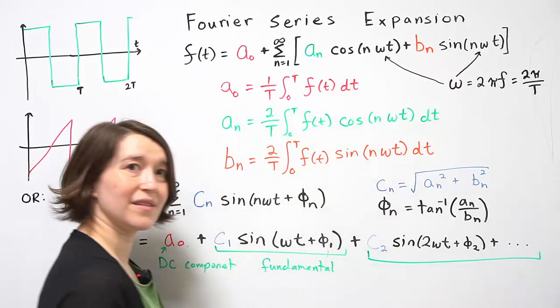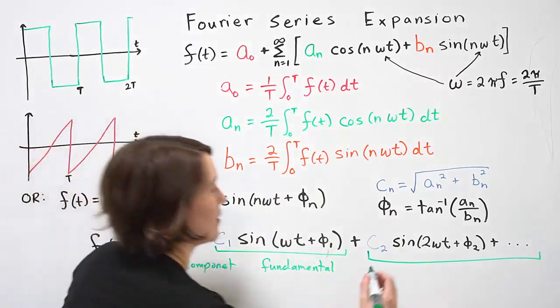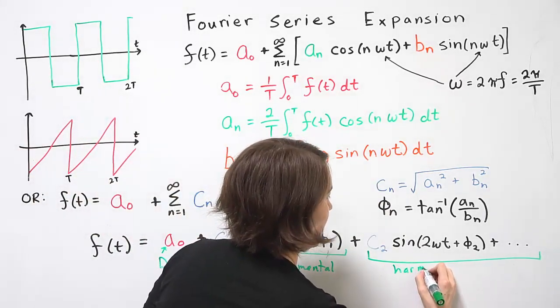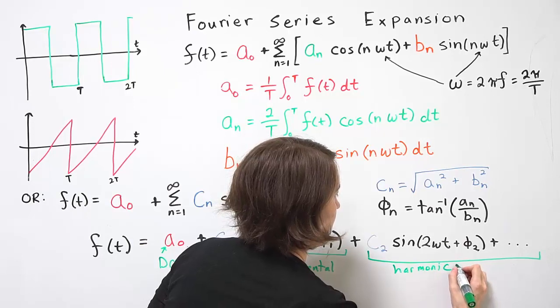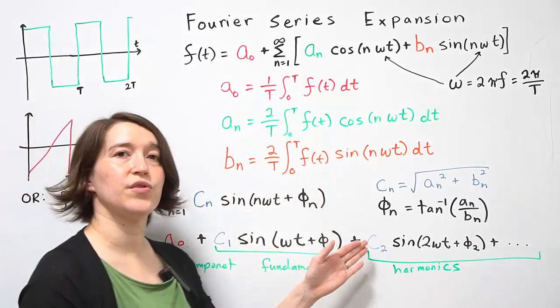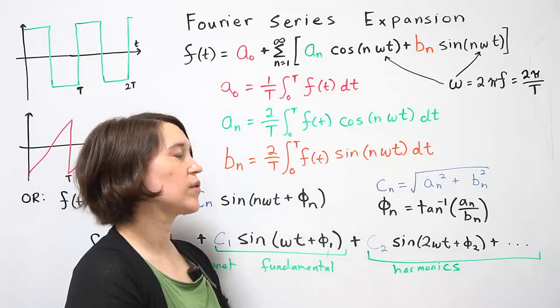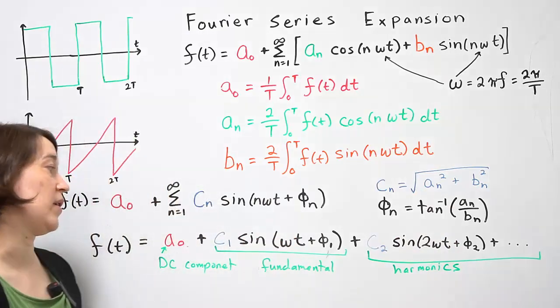All of the higher ones are what we call the harmonics. So any one from n equals 2 to infinity, those are the harmonics of our periodic waveform.